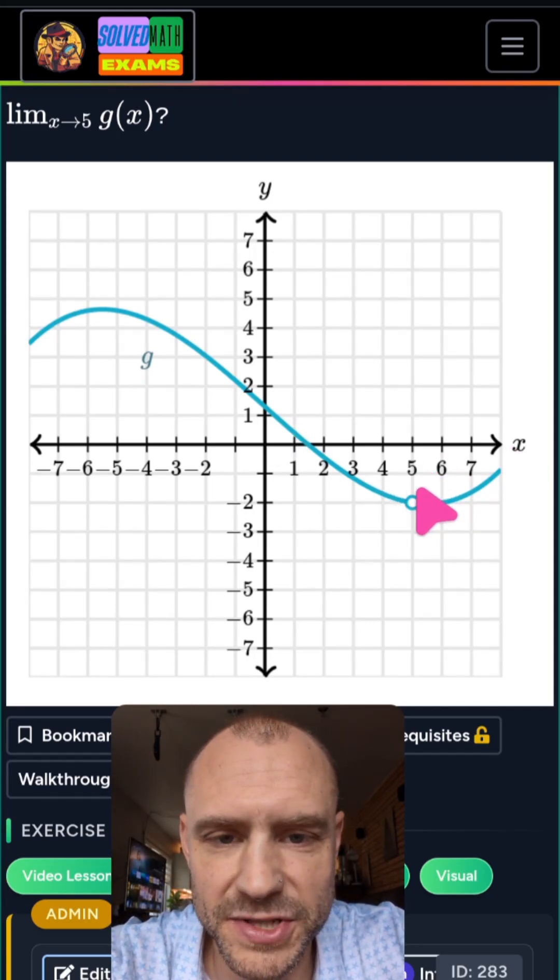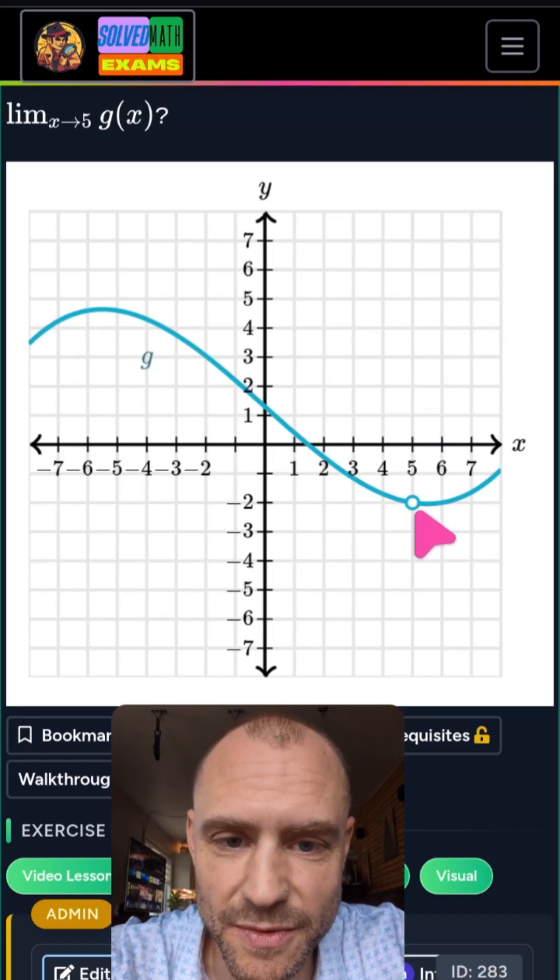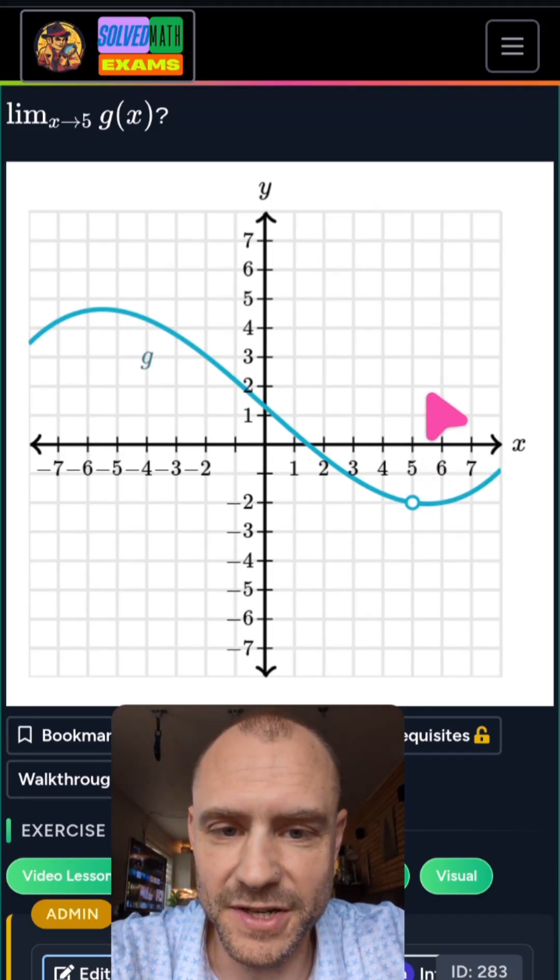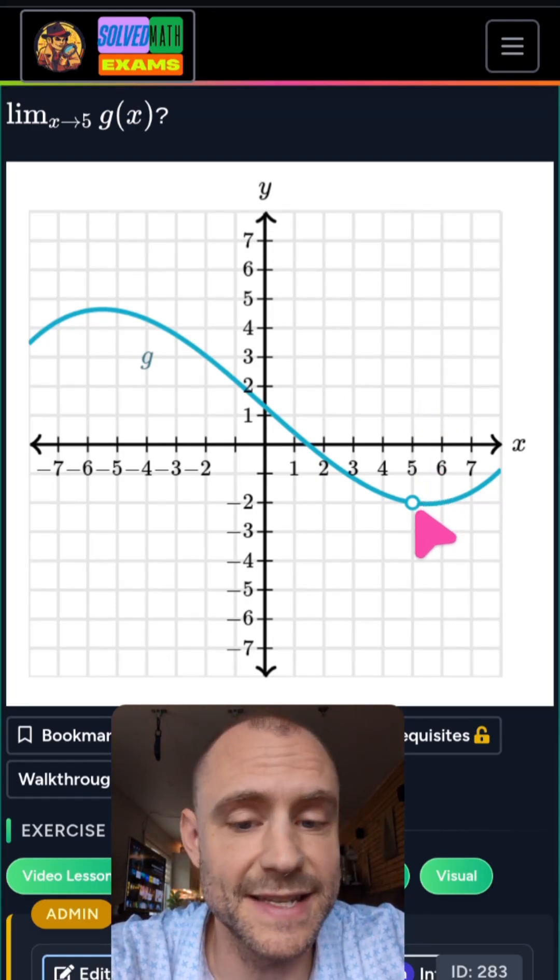So the question is, how does that affect the limit? Well, actually, for limits, we don't care what happens at the actual point. So at x equals 5, we don't care what the function value is. It does not even need to exist. Like in this case here, it doesn't exist. That's totally fine.